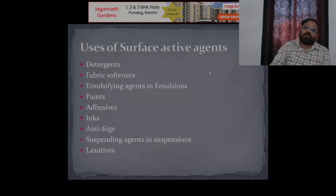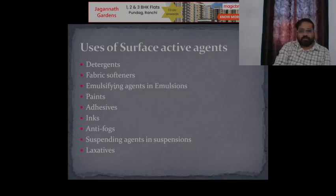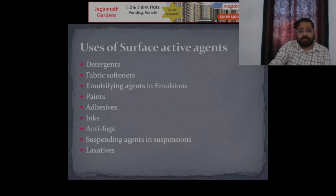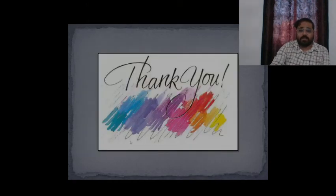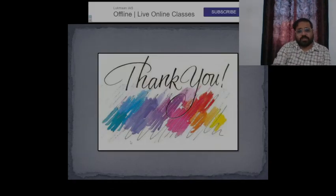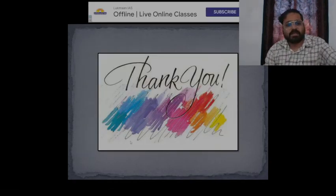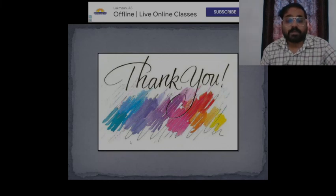The different uses of surfactants include detergents, fabric softeners, emulsifying agents, emulsants, paints, adhesives, inks, fogging agents, suspending agents, and laxatives. These are the basics about surface active agents. Thank you very much.